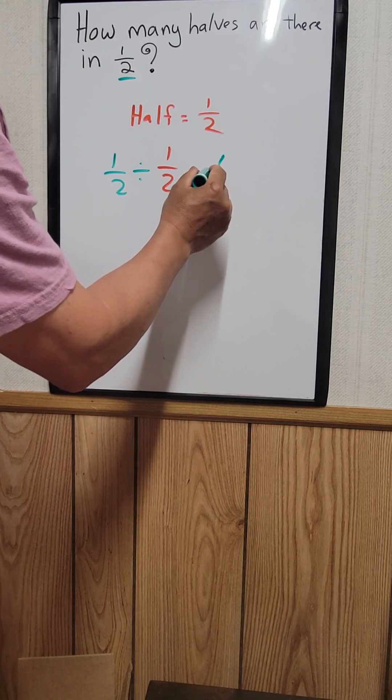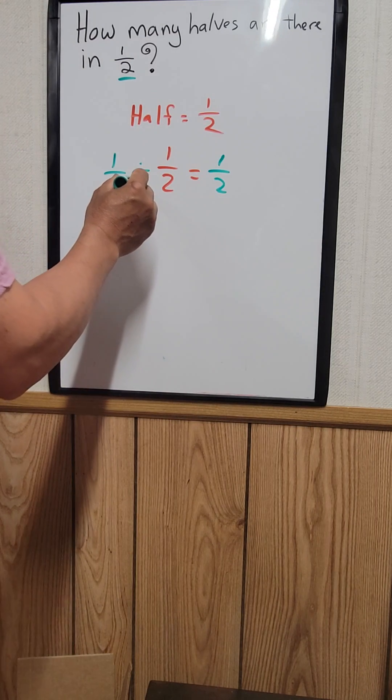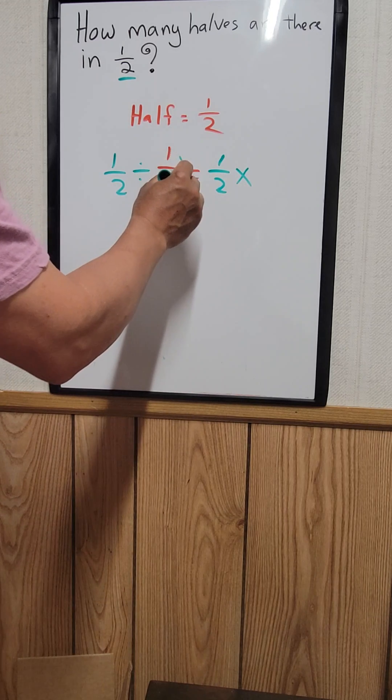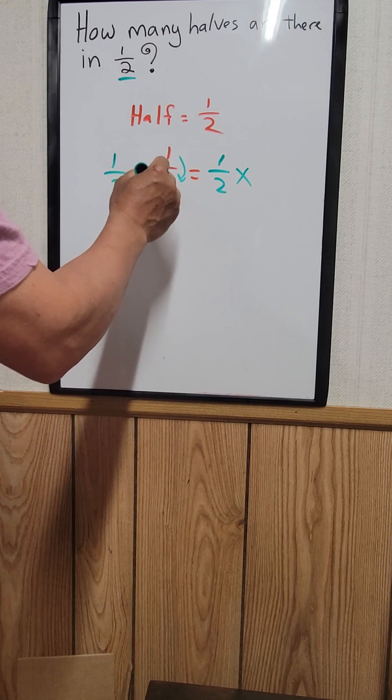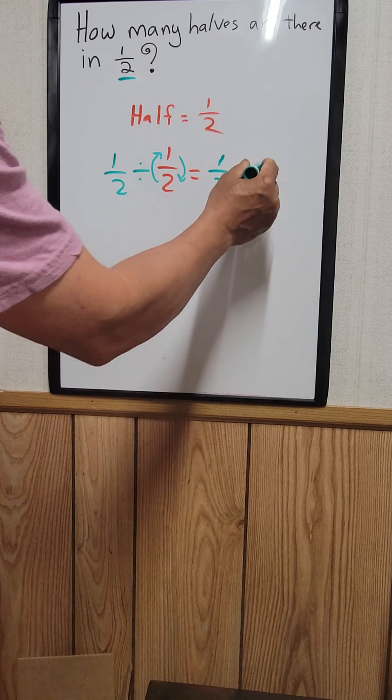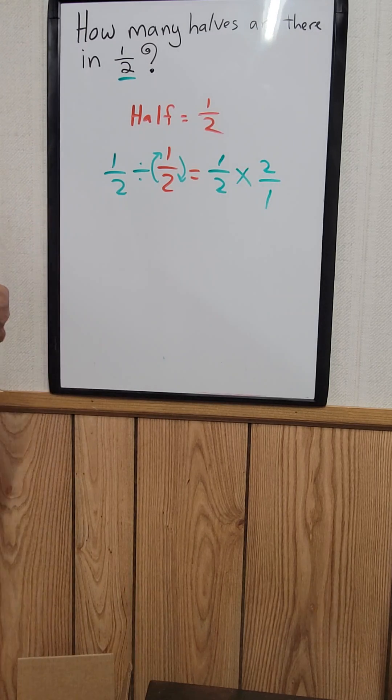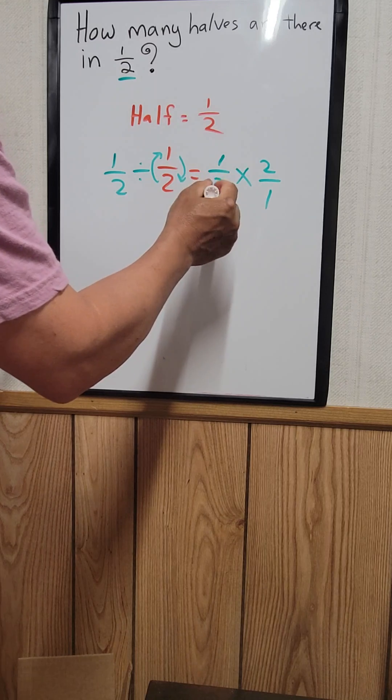Keep the first term, then change the division to multiplication, and then flip this number right here from top to bottom. So this becomes 2 over 1. And now we can use cross cancellation.